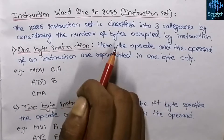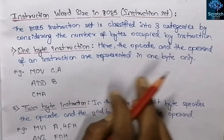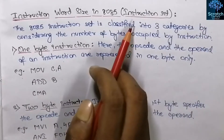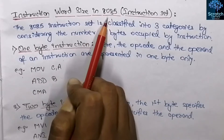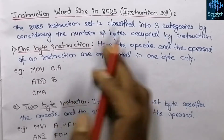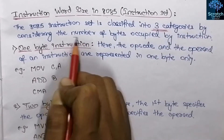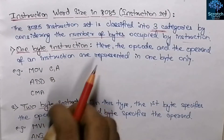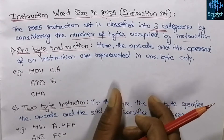If you don't know about the classification of instruction set in 8085 according to their functionalities, you can watch those videos — the link is given in the i-button. Talking about the classification of instruction sets in 8085 according to the length of the instruction, the 8085 instruction set is classified into three categories by considering the number of bytes occupied: one byte instruction, two byte instruction, and three byte instruction.